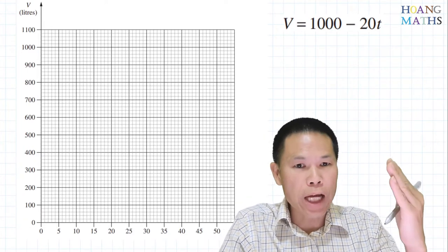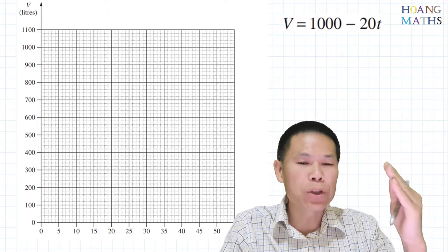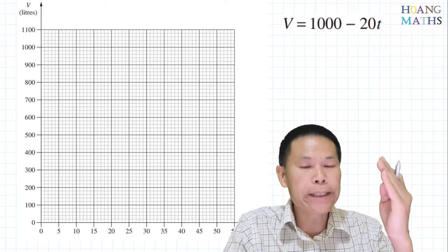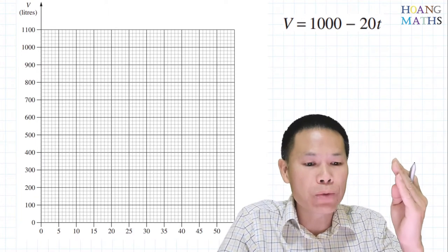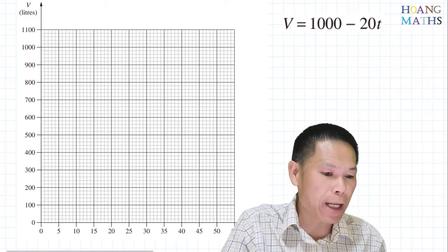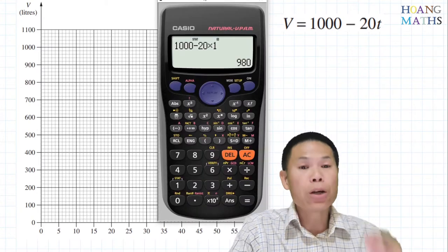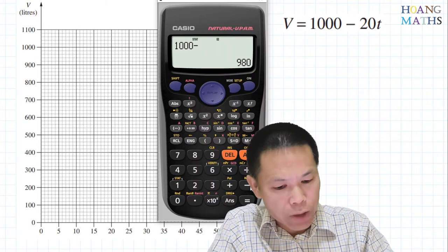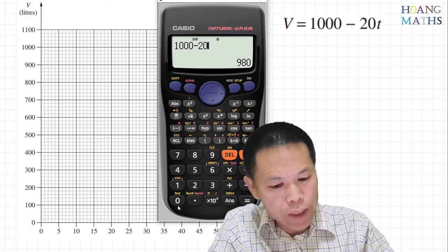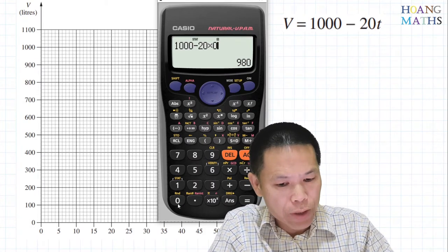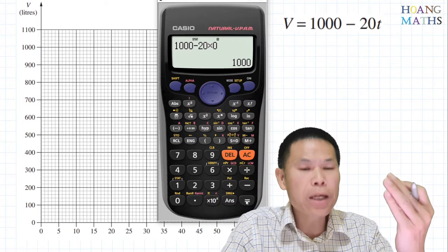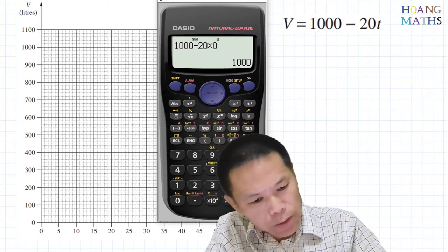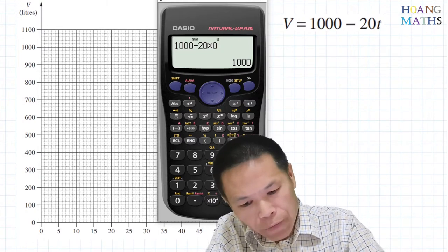Because it's a straight line, we just connect them together. First of all, when t = 0: 1000 − 20 × 0 = 1000. So I start from 1000 here.